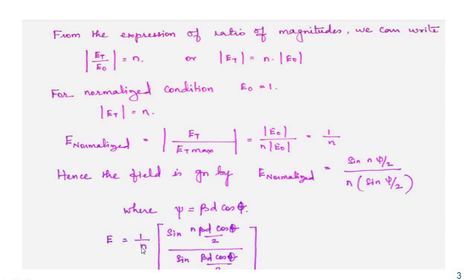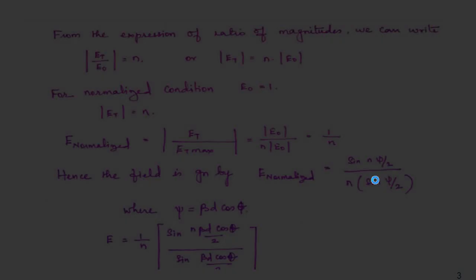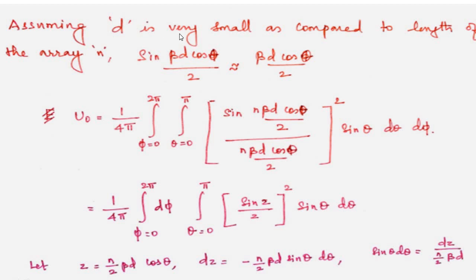The normalized field is given by: E_normalized = sin(nψ/2) / [n sin(ψ/2)], where ψ = βd cos θ. Here we take α = 0 because there is no progressive phase shift — we are dealing with a broadside array. So E = (1/n) × sin(nβd cos θ / 2) / sin(βd cos θ / 2). Assuming d is very small compared to the length of the array, sin(βd cos θ / 2) can be approximated as βd cos θ / 2.